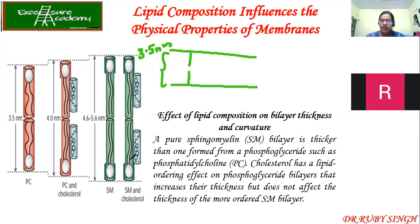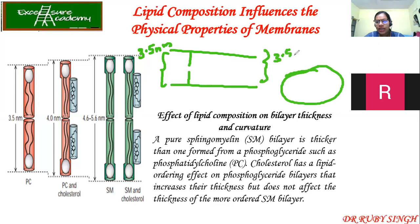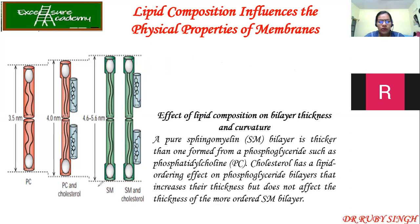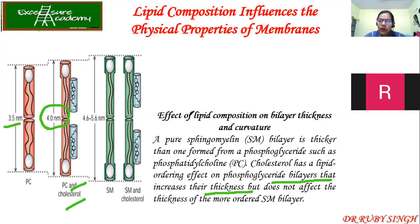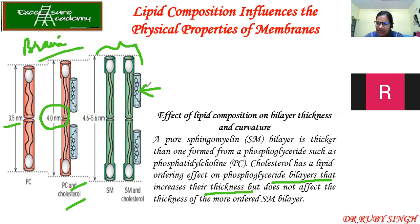On the cellular plasma membrane, the thickness is around 3.5 nanometers. Now, if you have both PC and cholesterol together, the thickness increases — from 3.5 to 4.0 nanometers. Cholesterol has a lipid-ordering effect on phosphoglyceride bilayers that increases their thickness. In the case of sphingomyelin, which is mainly found in brain and heart tissues, when cholesterol interacts with it there is no further increase in thickness, but the bilayer itself is more thicker and wider — around 4.6 to 5.6 nanometers. So cholesterol does not affect the thickness of the more ordered sphingomyelin bilayers.